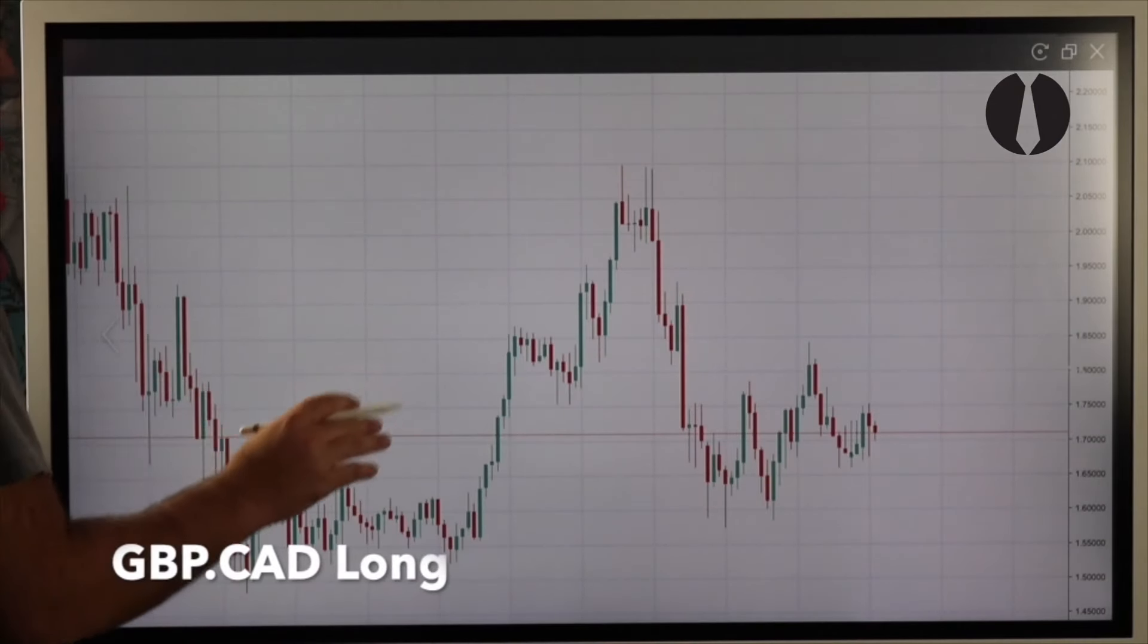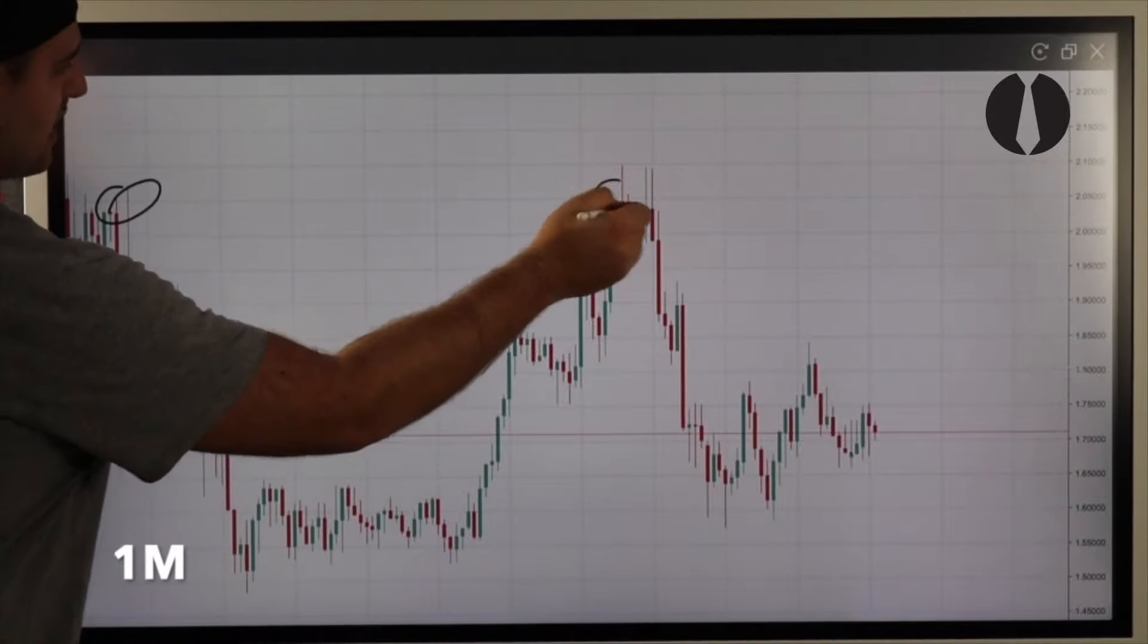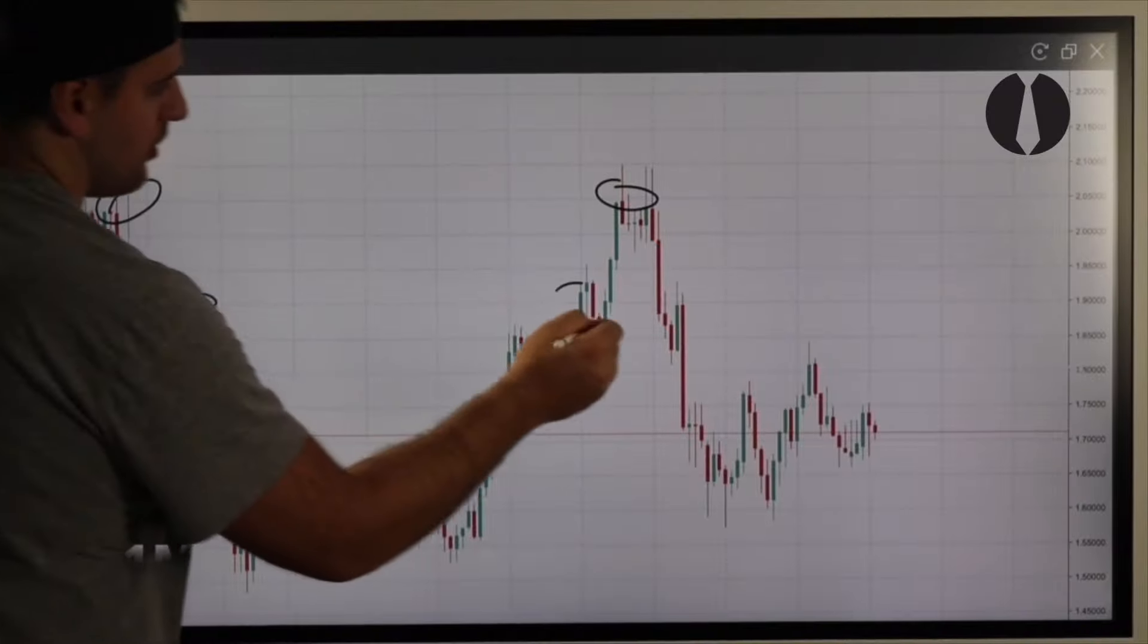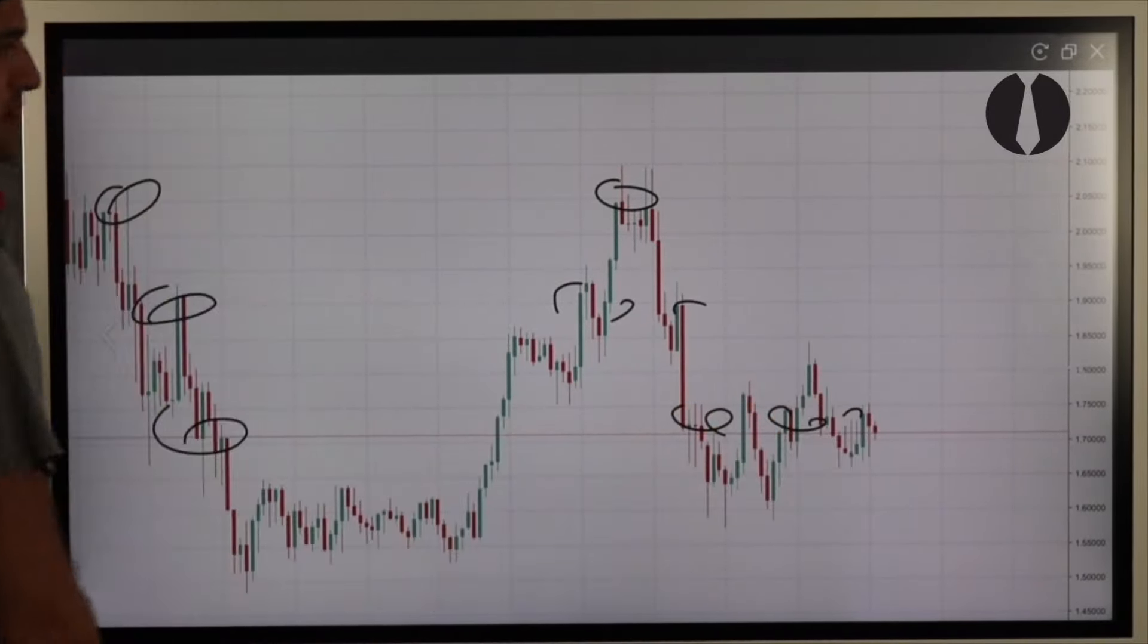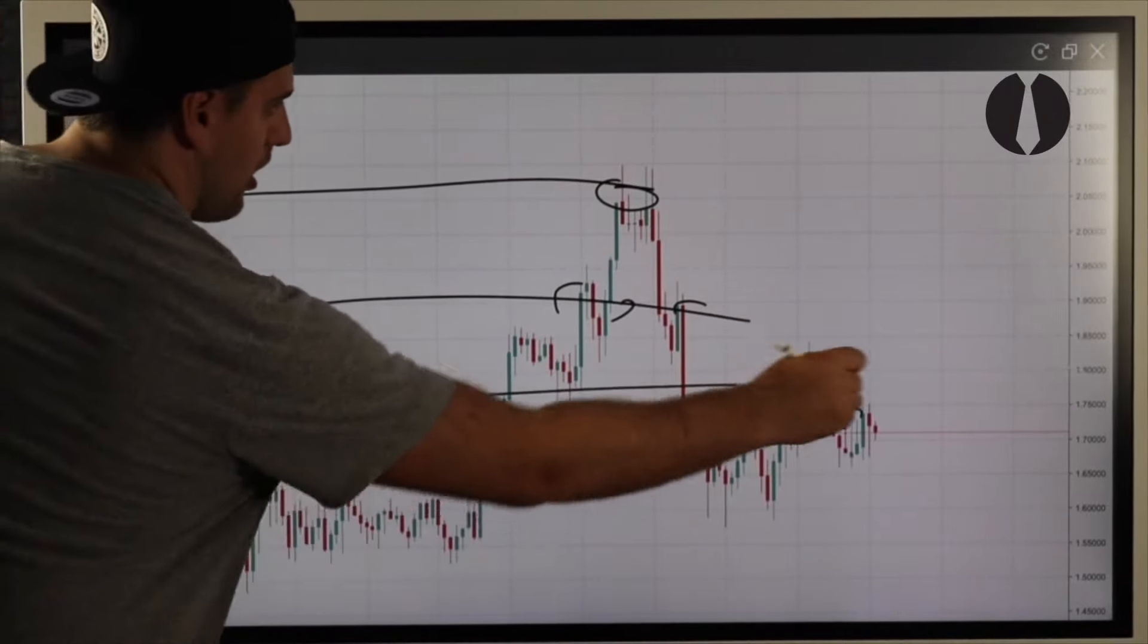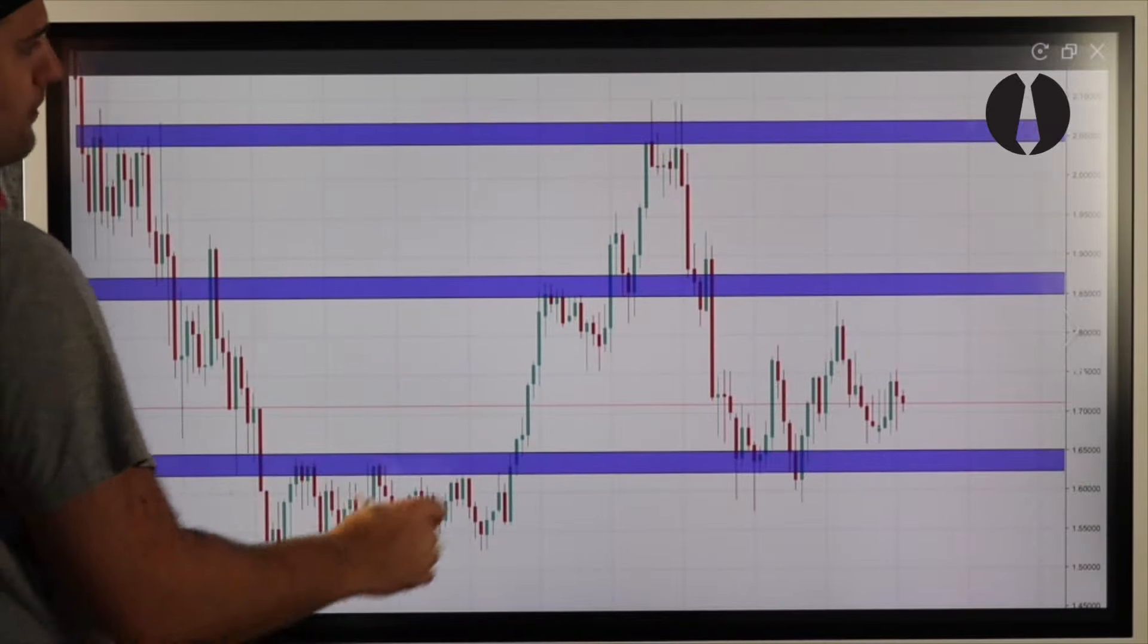Alright, GBP/CAD starting on the monthly. What's the first thing we do? That's right, we look for our zones. We see horizontal sell pressure turning into buy pressure. We identify our monthly zones, then after identifying monthly zones we look for flow.